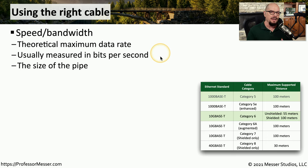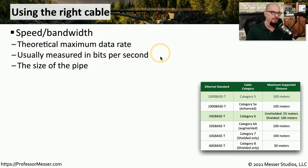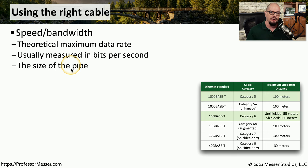On the networking side, we tend to measure this in bits per second. So if you look at an ethernet cable, it might be a 100 megabit per second ethernet cable or a gigabit per second ethernet cable. You can think of this speed or bandwidth as the total size of the pipe that we would put data through.